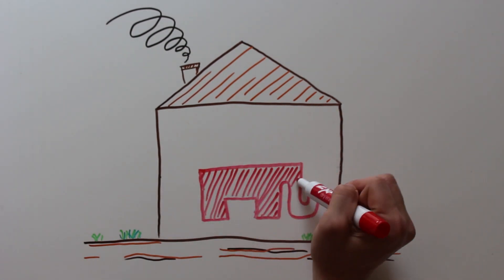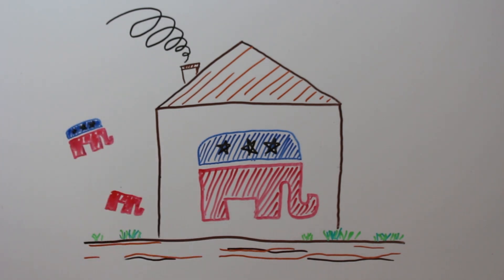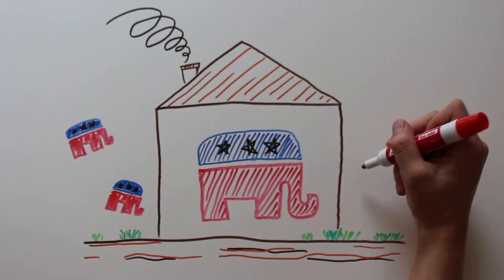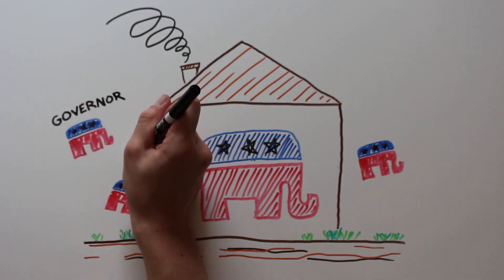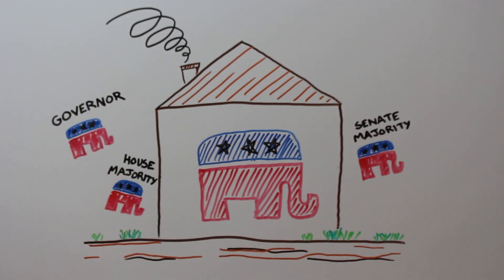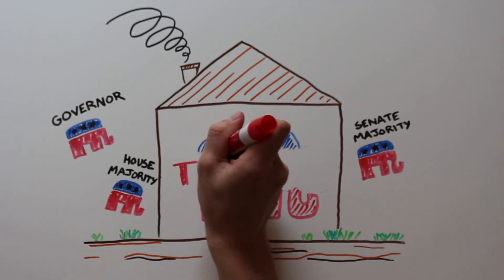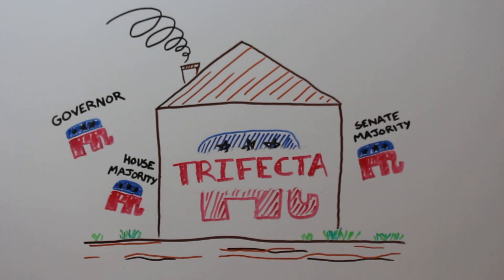Texas is one of 25 states where one party — in this case the Republican Party — has control over the major parts of government, meaning the governor and the majority in both the House and Senate is Republican. This is known as the trifecta.